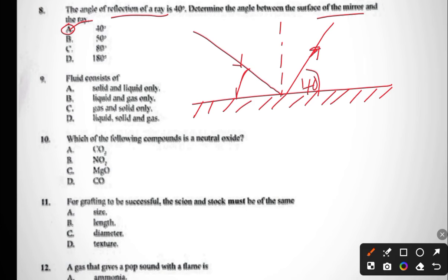Fluids are actually liquids and gases, so number nine is B. Question ten: which of the following compounds is a neutral oxide? A, carbon dioxide; B, nitrous oxide; C, magnesium oxide; D, carbon monoxide. The answer to question ten is D, carbon monoxide.